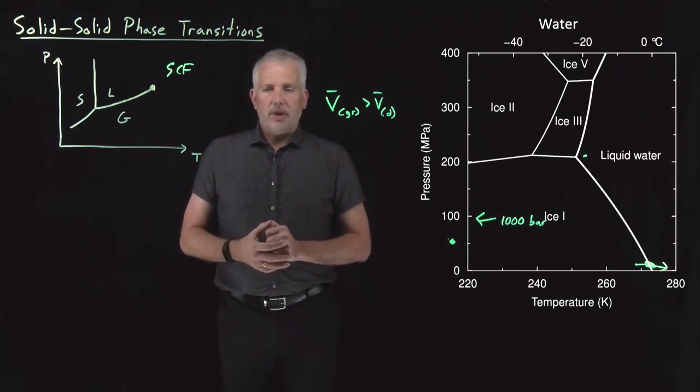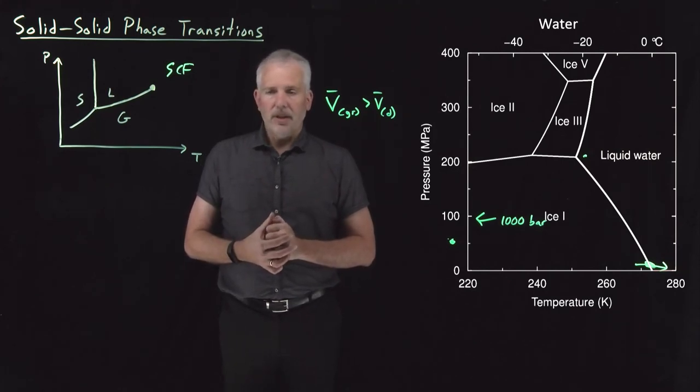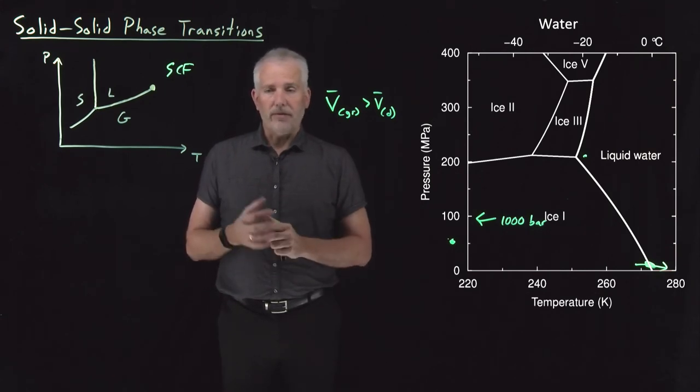Most interesting chemistry, of course, happens when there's more than one component in the system at the same time. And in that case, phase diagrams get a little bit more complicated in multiple component systems, in solutions, for example, where we have a solute dissolved in a solvent. So that's our next step, is to begin talking about multiple component thermodynamics.